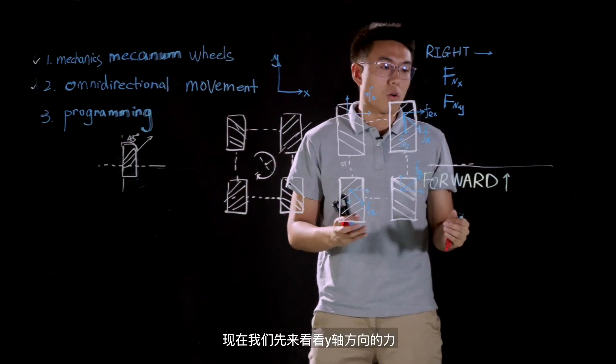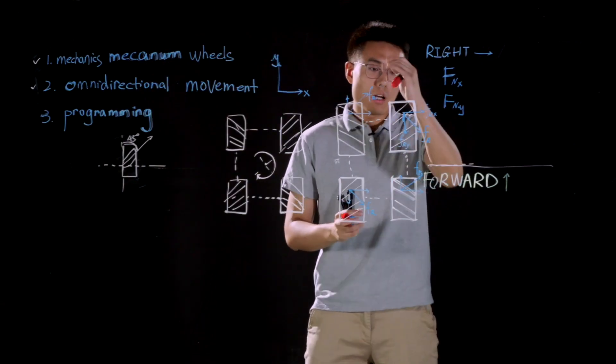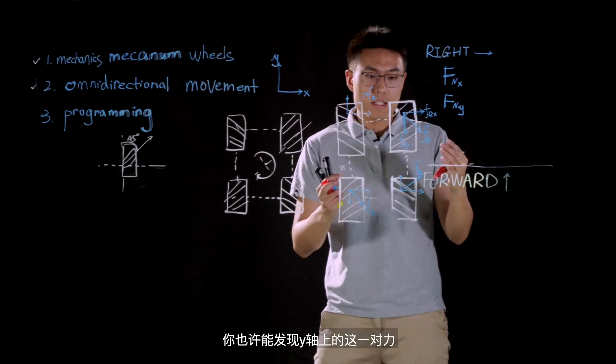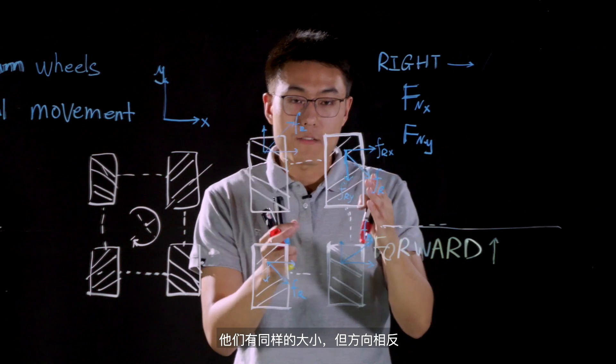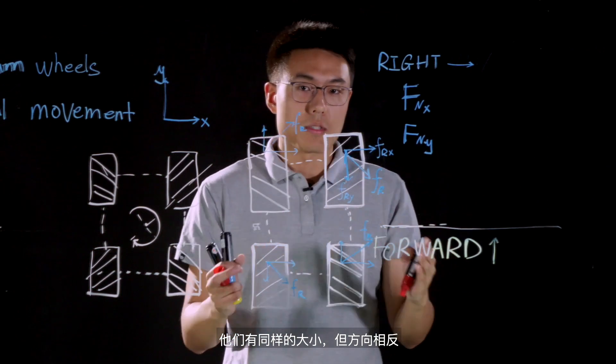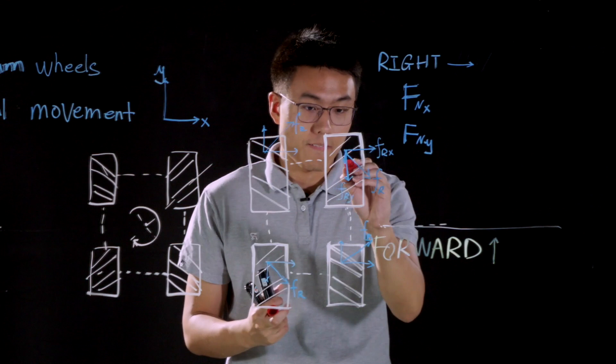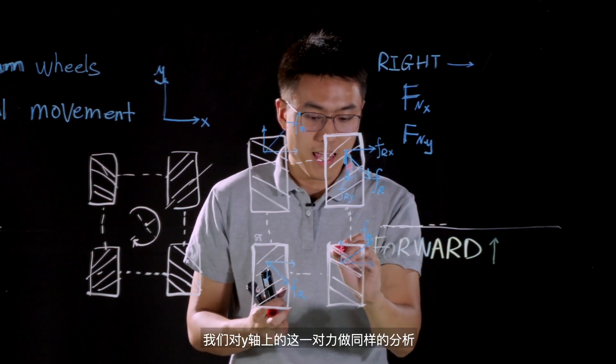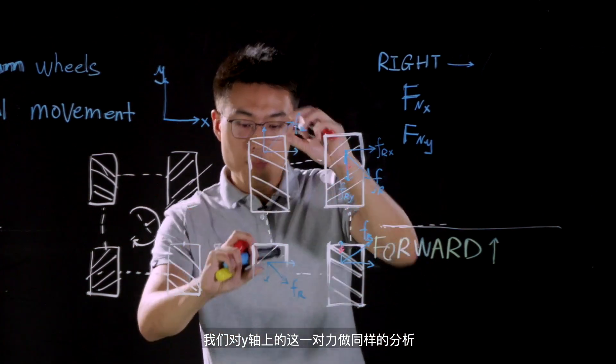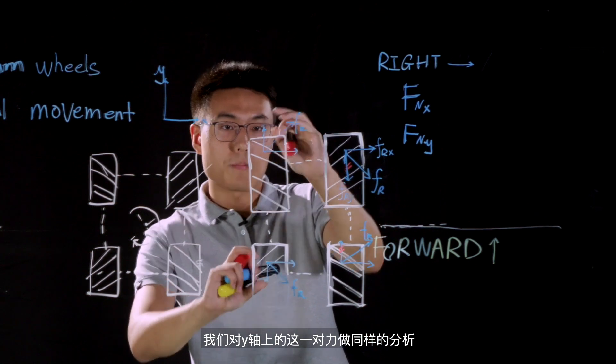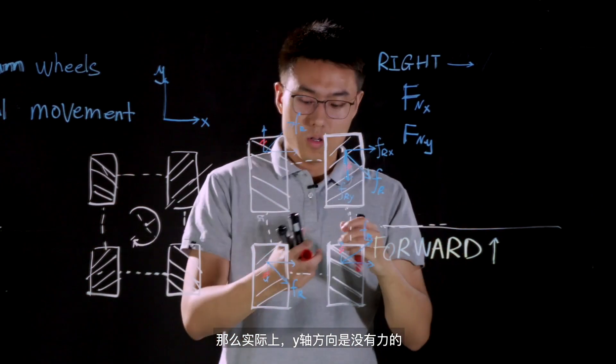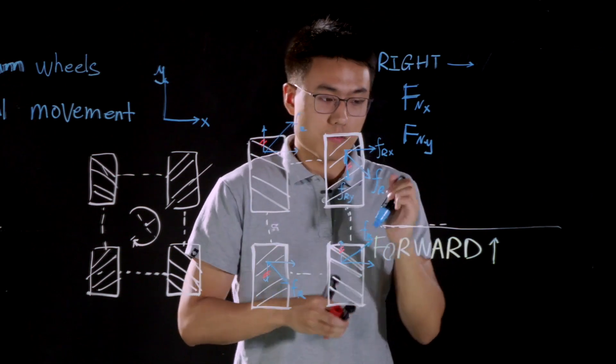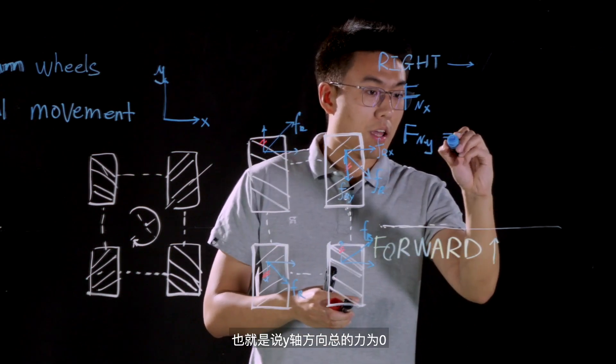Now, let's take a look at the net force on Y direction first. You may notice that this pair of forces on Y direction, they have same magnitude but in opposite directions. That's why they can be cancelled with each other. And we can do the same thing for this pair of forces on Y direction as well. Thus, there is no force at all on Y direction. So, the net force here is zero.